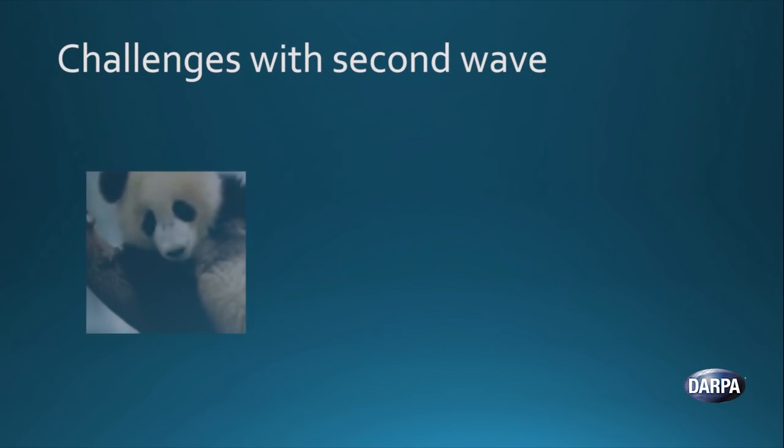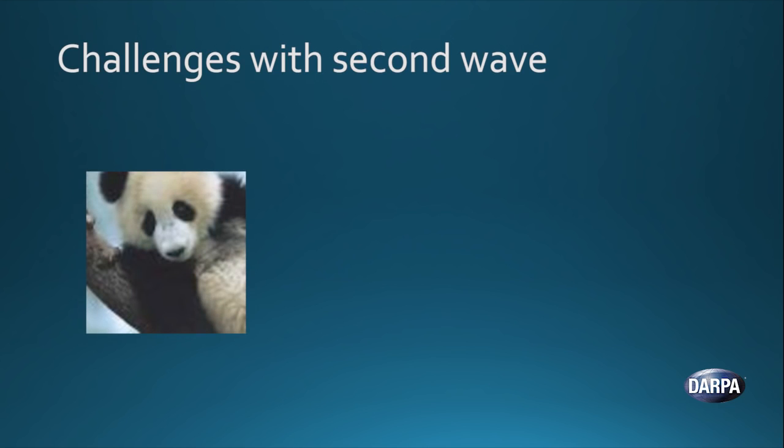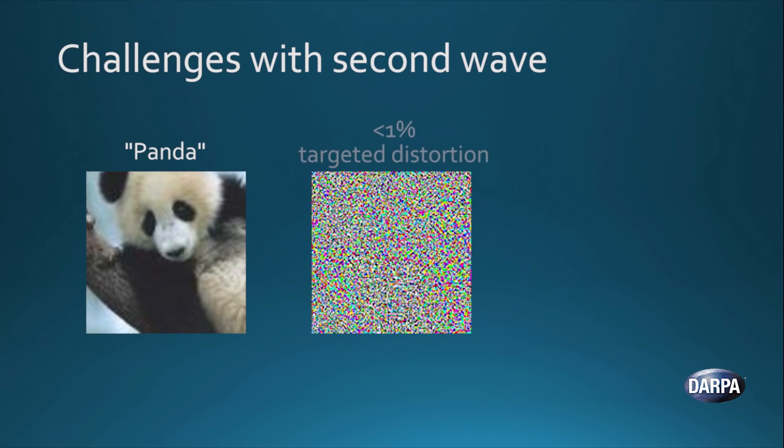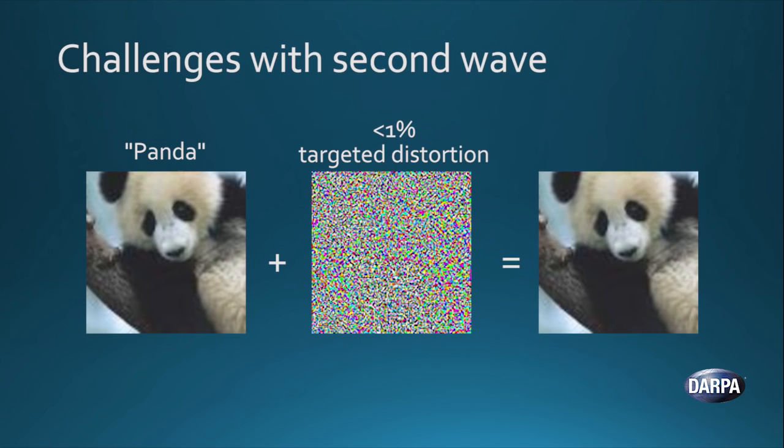Here's another example. The picture on the left is that of a panda and a vision recognition system looks at that and says, that's a panda. And then an engineer took a particular pattern of data that they reverse engineered based on the way the calculations were happening on the spreadsheet and designed that distortion, added it to the picture. The picture on the right to you and me is indistinguishable. We would say, that's the same picture. And yet to the same vision system, it says with 99% certainty that that's not a panda, that's a gibbon.